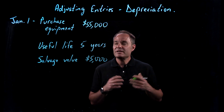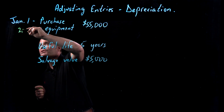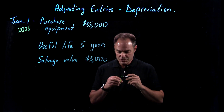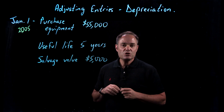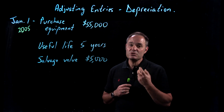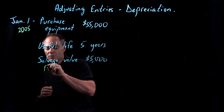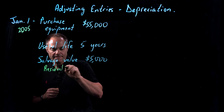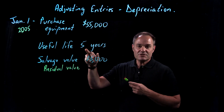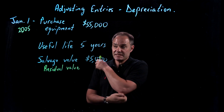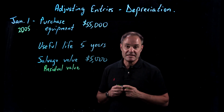We're going to jump right into an example. Imagine that on January 1st, 2005, a company goes and buys a piece of equipment for $55,000. This equipment has a useful life of five years, so they anticipate using it for the next five years. It has what we call a salvage value or residual value of $5,000, which means that at the end of five years, the company expects to either sell the equipment or get $5,000 back from the original $55,000 they paid.